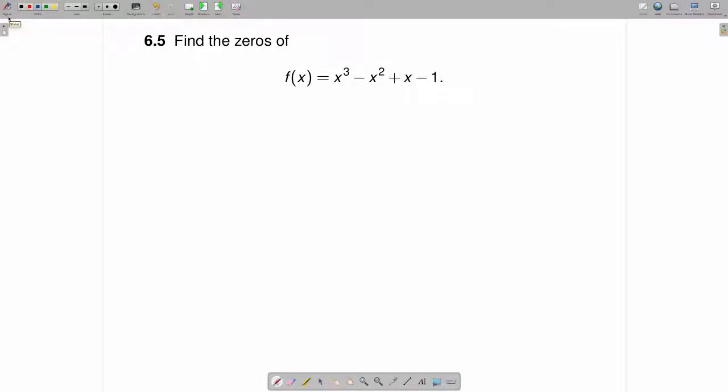Find the zeros of f(x) = x³ - x² + x - 1. In order to find the zeros of f(x), that's equivalent to saying find the x values which give f(x) = 0.